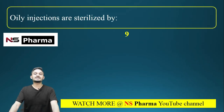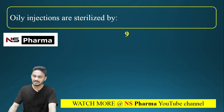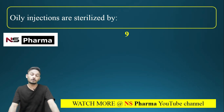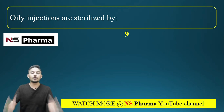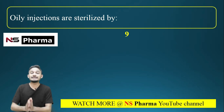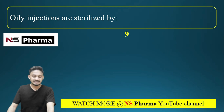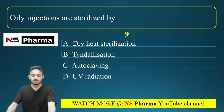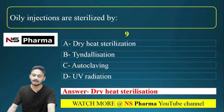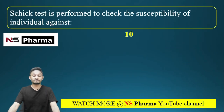Question 9: Oily injections are sterilized by — this is an important question that has already been asked in competitive exams. Options: (a) dry heat sterilization, (b) tyndallization, (c) autoclaving, (d) UV radiation. The correct answer is option A: dry heat sterilization.